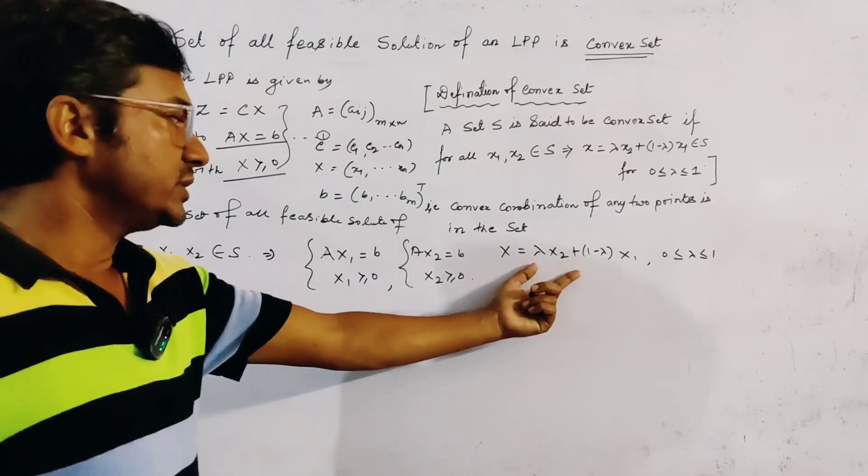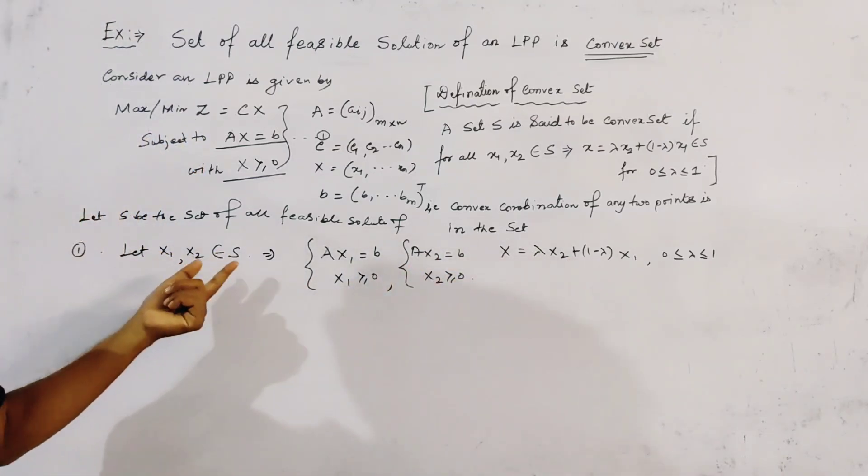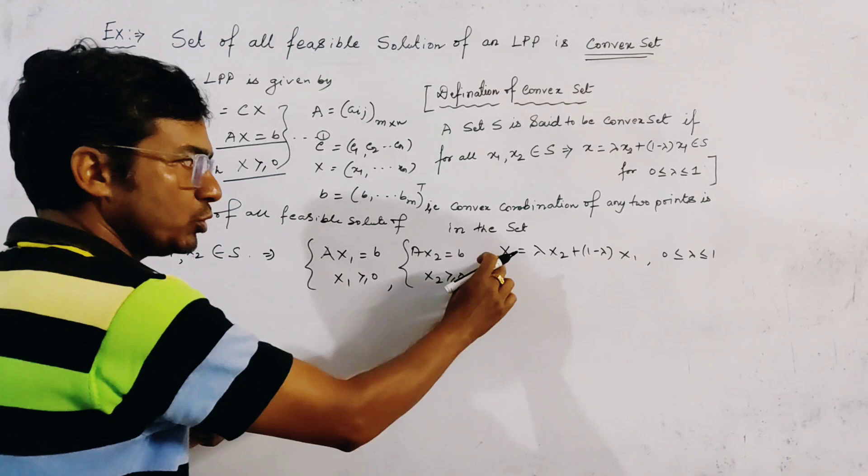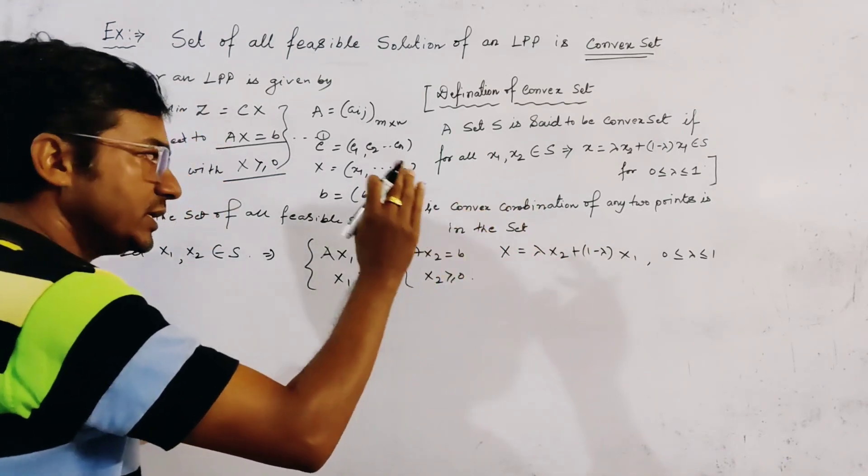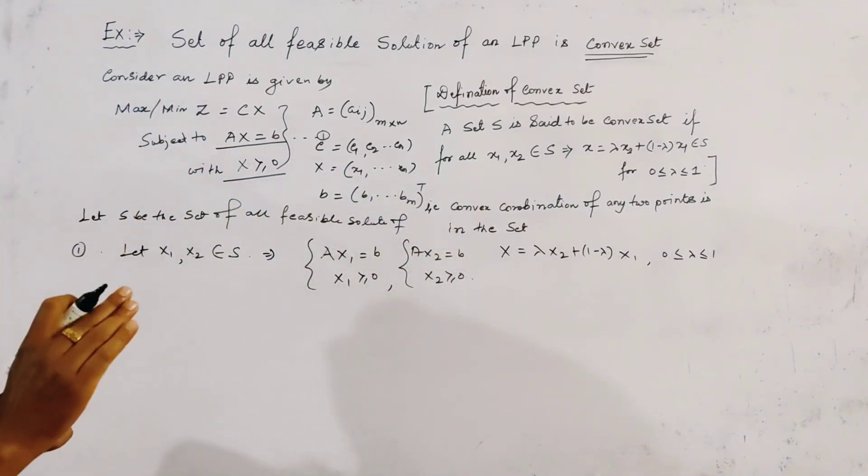This is the convex combination of these two points of X. Now, we have to show this point, or the convex combination, is also belongs to the set.